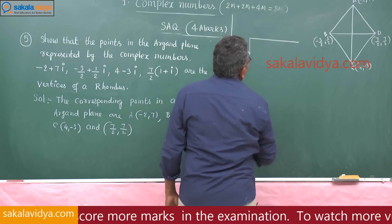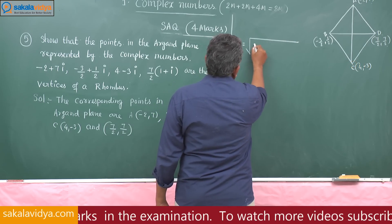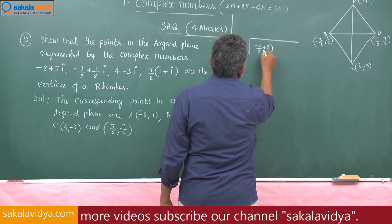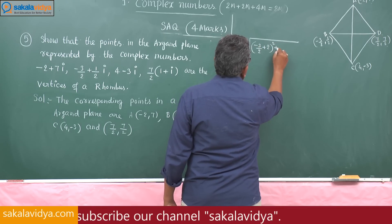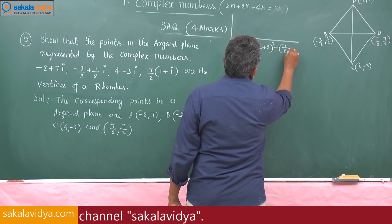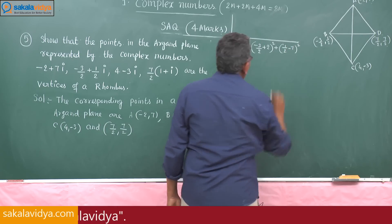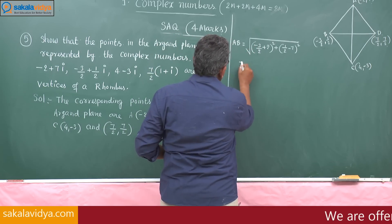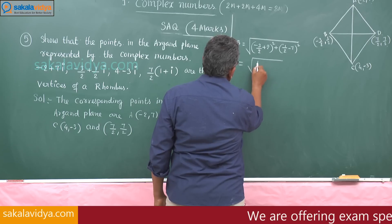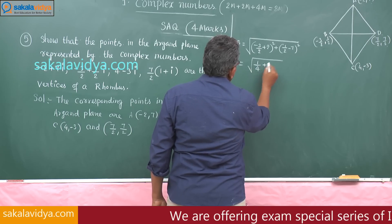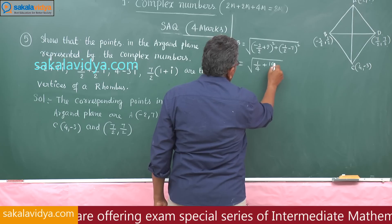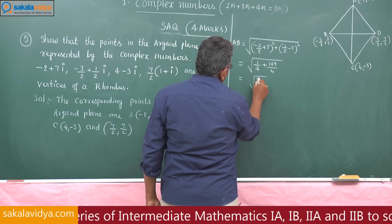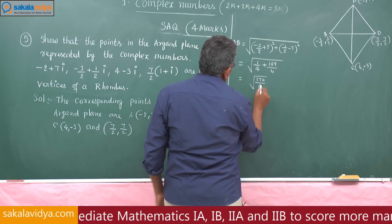AB is the square root of (minus 3 by 2 plus 2) squared plus (1 by 2 minus 7) squared. That gives root of (1 by 2) squared plus (minus 13 by 2) squared, which is root of 1 by 4 plus 169 by 4, giving AB = root of 170 by 4.